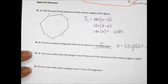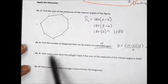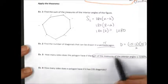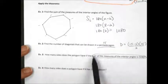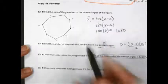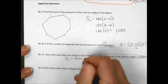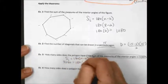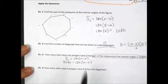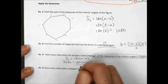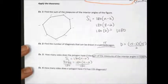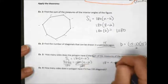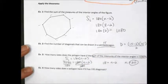These last two problems go in the opposite direction. How many sides does a polygon have if the sum of the interior angles is 3,240? Using 180 times (n minus 2) equals 3,240, divide both sides by 180 to get 18 equals n minus 2, which means n equals 20 sides.